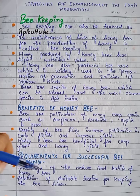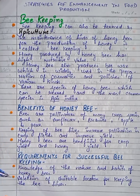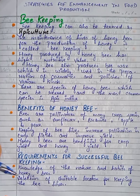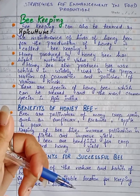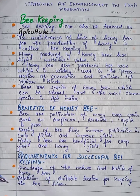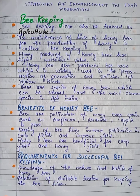Requirements for successful beekeeping. What do we need for successful beekeeping? First is knowledge of the nature and habits of the honey bee. We need to have knowledge about the honey bee — its nature and its habits.